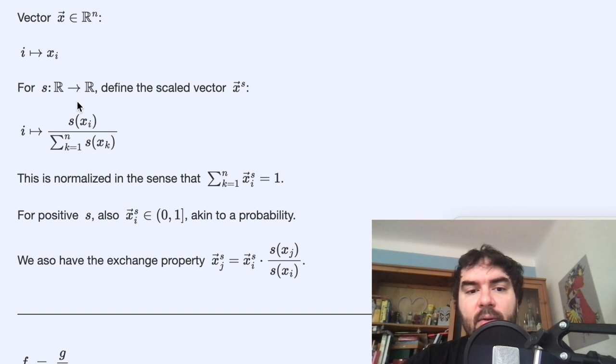And why this is nice is that if you take this new object I call x superscript s—this scaled component-wise and normalized x—if you sum over all the individual components, then you get a sum in the numerator, sum in the denominator, and so it's one. It's normalized in that sense. And if s is positive for all inputs, then it also means that this thing lies in the interval between zero and one, and so it can function as a probability. And this is also how it's used.